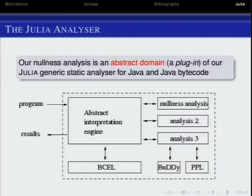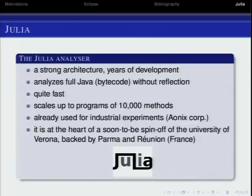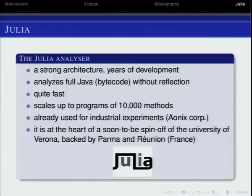Here is the structure of Julia. You have an abstract interpretation engine and the library BCEL to access and deal with the bytecode. Then you can plug in as many analyses as you want — we currently have seven or eight. They can use their own libraries, such as a library for binary decision diagrams. This is five years of development. It works if you don't have reflection, is quite fast, handles up to 10,000 methods, and has been used for some industrial application by Ionix, a company in California, for information flow analysis of Java.